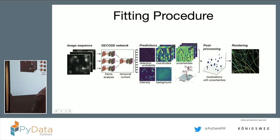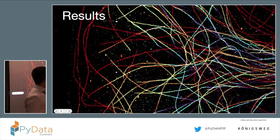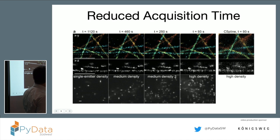You also get some additional information: background information and uncertainty estimates, which is quite useful. And we were seeing that this works out nicely, so the results look like this.